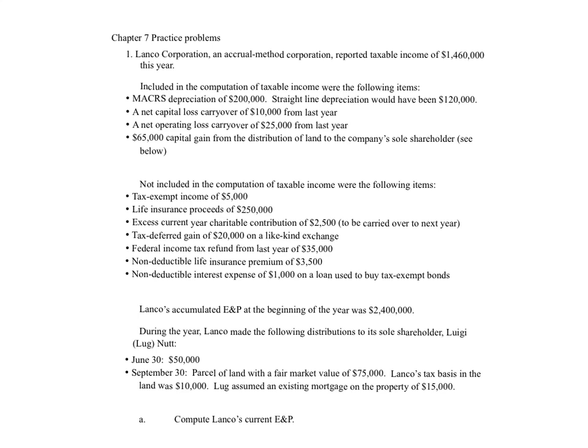Here we are with Chapter 7, and we're going to do the Chapter 7 Big Comprehensive Problem. This is very similar to one of your homework problems. This problem encompasses the most important topics for us in Chapter 7. We are going to calculate current earnings and profits, figure out the amount of dividend that's reported, and then figure out corporate accumulated earnings and profits at the beginning of the next year. There are three parts to this problem, but I'll make three videos. This will just be Part A, and our main concern with this part will be to figure out current earnings and profits.